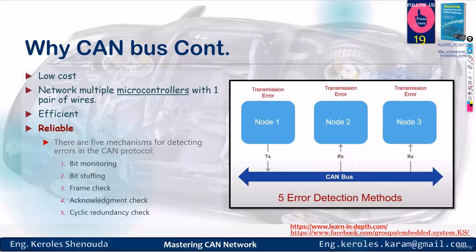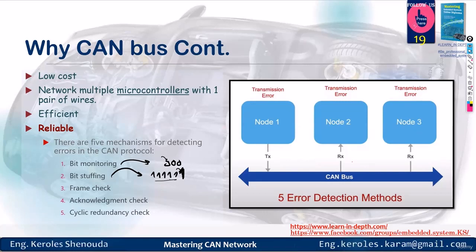The CAN is reliable. What does this mean? We have five mechanisms for detecting errors in the CAN protocol. It can perform bit monitoring, meaning it checks each transmitted bit to ensure it was sent correctly. There is also bit stuffing — for instance, if I send six ones, it gets concerned and inserts a zero between the fifth and sixth bits. The receiver then removes this zero to read them together, ensuring they aren't continuously stuffed with a certain value.